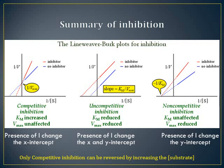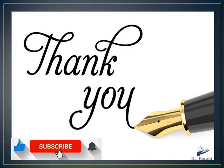This is a summary of the three types of reversible inhibition. Competitive inhibition increases Km and leaves Vmax unaffected; on the Lineweaver-Burk plot, the lines intersect on the y-axis. Uncompetitive inhibition reduces both Vmax and Km, and the diagnosis is parallel lines on the plot. For non-competitive inhibition, only Vmax is decreased while Km is unaffected, and the plots intersect on the x-axis. Now we've arrived at the end of this video — I hope this was helpful, and thank you for watching!